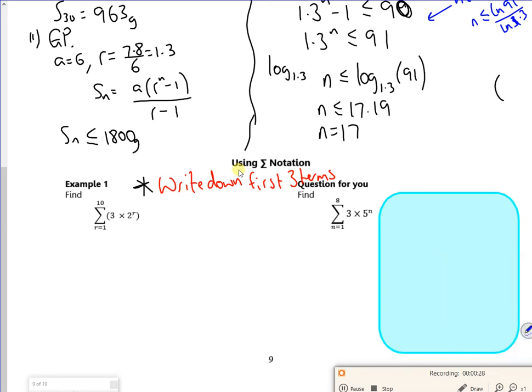So if I put r as 1 in, I've got 3 times 2, which is 6. If I put r as 2 in, I've got 3 times 4, which is 12. If I put r as 3 in, I've got 3 times 8. So hopefully you can see that I'm not adding on 6, I'm multiplying by 2.